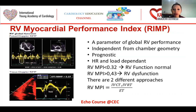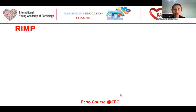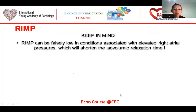There are two different approaches for the myocardial performance index: we can find it using pulsed Doppler or tissue Doppler. The formula is the same: isovolumic contraction time plus isovolumic relaxation time divided by ejection time. We must keep in mind that the myocardial performance index can be falsely low in conditions associated with elevated right atrial pressures, which will shorten the isovolumic relaxation time.